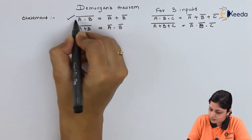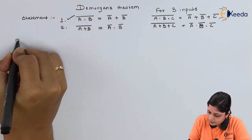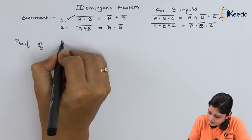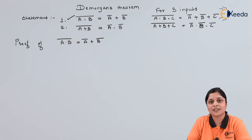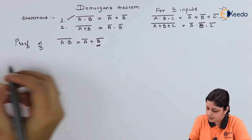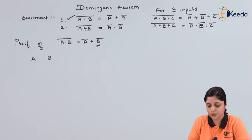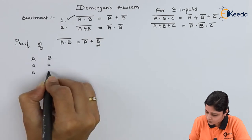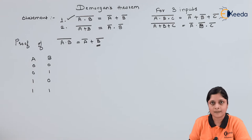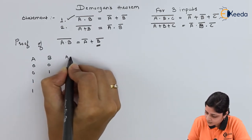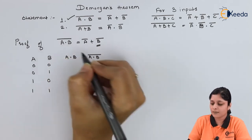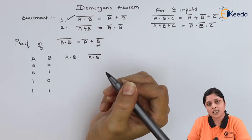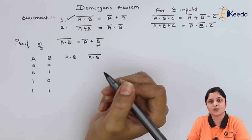Now we will see the proof of the first theorem. We will prove that the complement of A dot B equals A-bar plus B-bar using a truth table. For that you need the inputs and the final equations. The right-hand side should match the left-hand side.